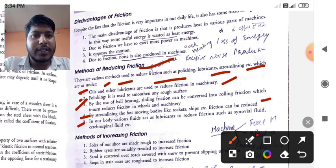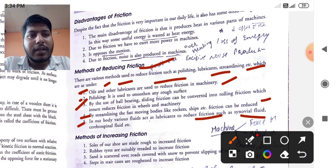The fifth one point is given here, in our body, various fluids act as lubricants to reduce friction such as synovial fluid, cerebrospinal fluid, etc. So, these are the methods of reducing friction.